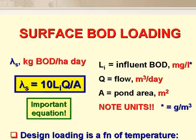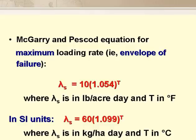The value we use for λs depends on the design temperature. The McGarry–Pescod equation for the maximum BOD loading rate on facultative ponds is λs = 10 × (1.054)^T, where λs is in pounds of BOD per acre per day and T is the design temperature in degrees Fahrenheit. In SI units their equation becomes λs = 60 × (1.099)^T, where the units are kilograms per hectare per day and degrees Celsius.